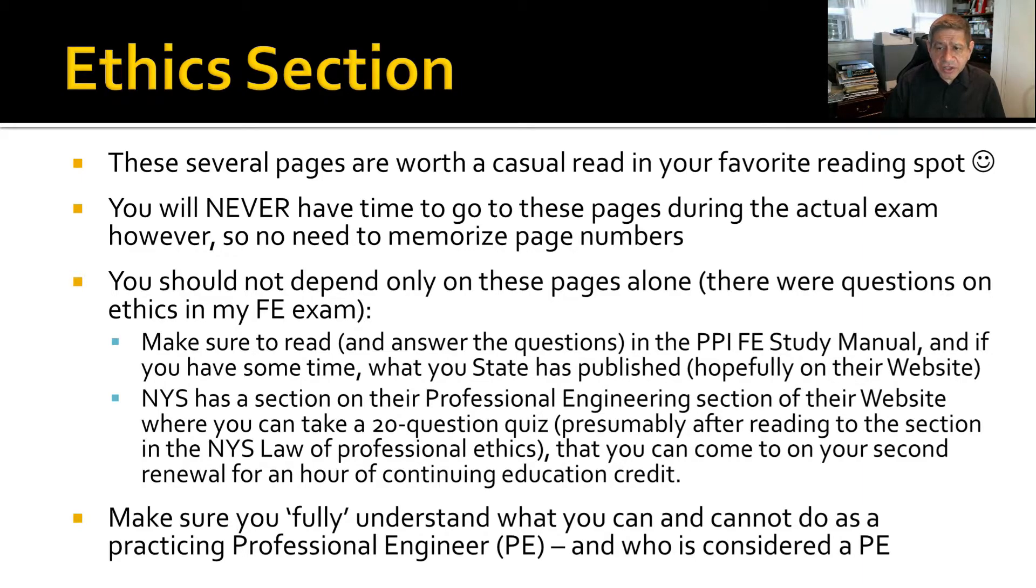You should not depend on these pages alone. Make sure to read and answer the questions in the PPI FE study manual. And if you have some time, see what your state has published. Hopefully they have a website where they show something. New York State had a very good section on this, which not only included a lot of details about the ethical rules, but it included a sample 20 question quiz. And that quiz was used later on once you need to renew your license in order to get an additional CPE, continuing education credit, by getting, I believe it was an 80 on that test. It doesn't get submitted to them. They expect you to print out the results and keep it for your record. So you can try it as many times as you want to get the score you need. Make sure you fully understand what you can and cannot do as a practicing professional engineer and who is considered a PE.